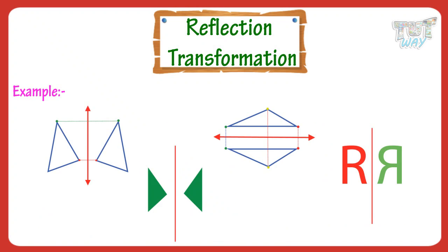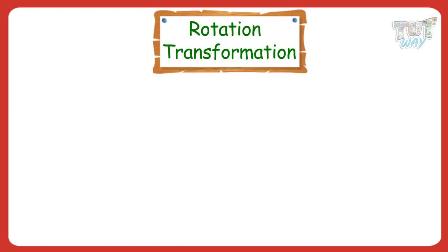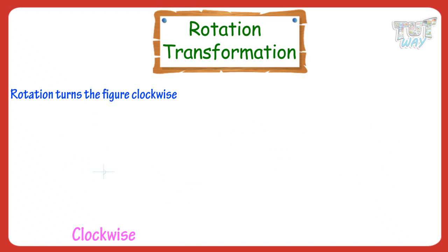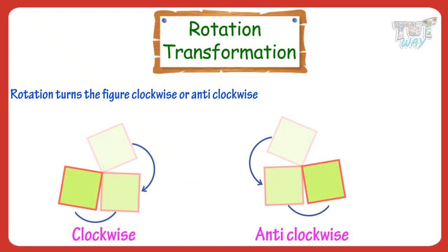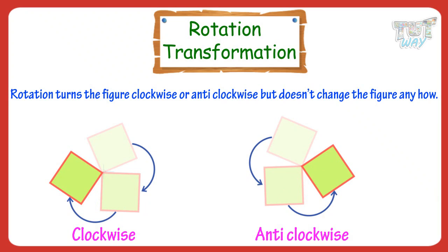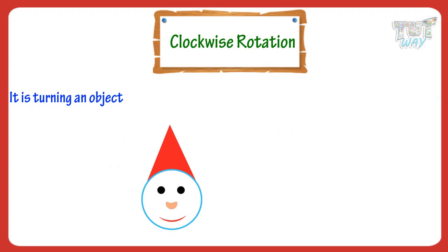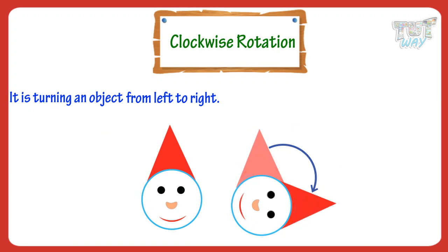Now let's learn another type of transformation — it is rotation. Rotation turns the figure clockwise or anticlockwise but doesn't change the figure anyhow. That is, the shape and size of the image are not changed. It is turning an object from left to right, which is called turning clockwise.